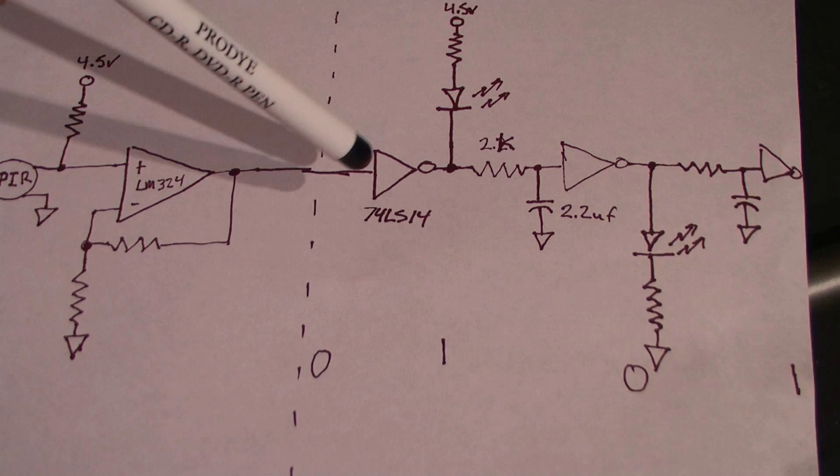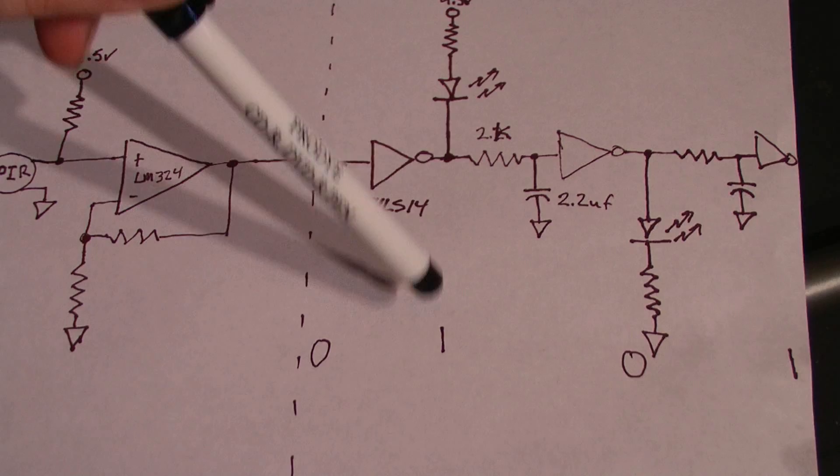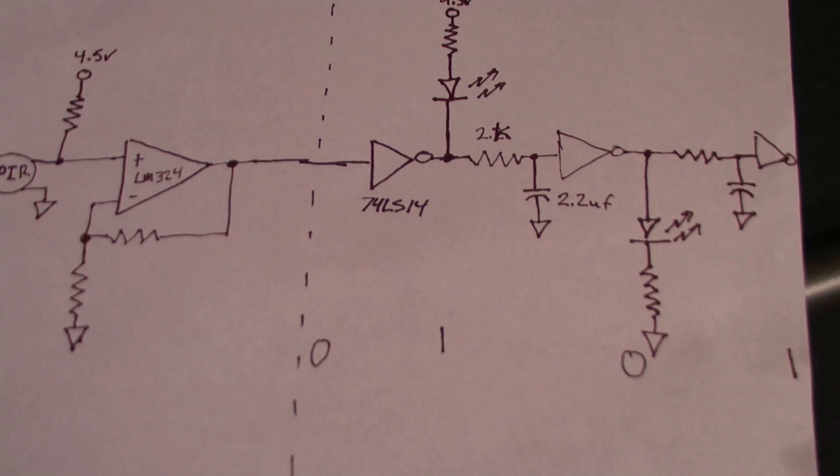So if we toggle this, for instance, if there's motion in front of the PIR sensor, these delay elements will start to transition, and these LEDs will turn on one at a time.